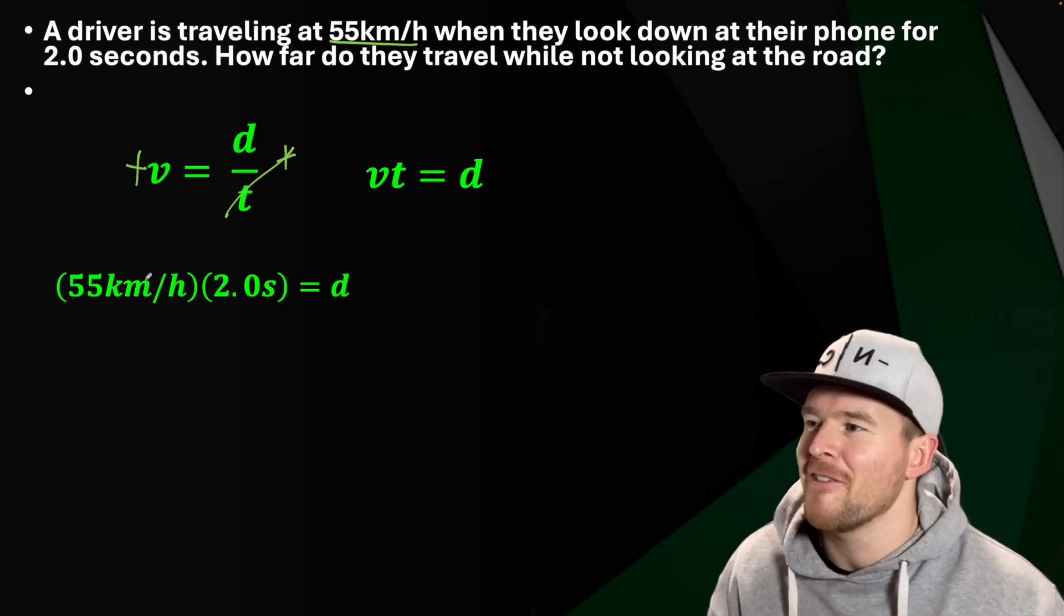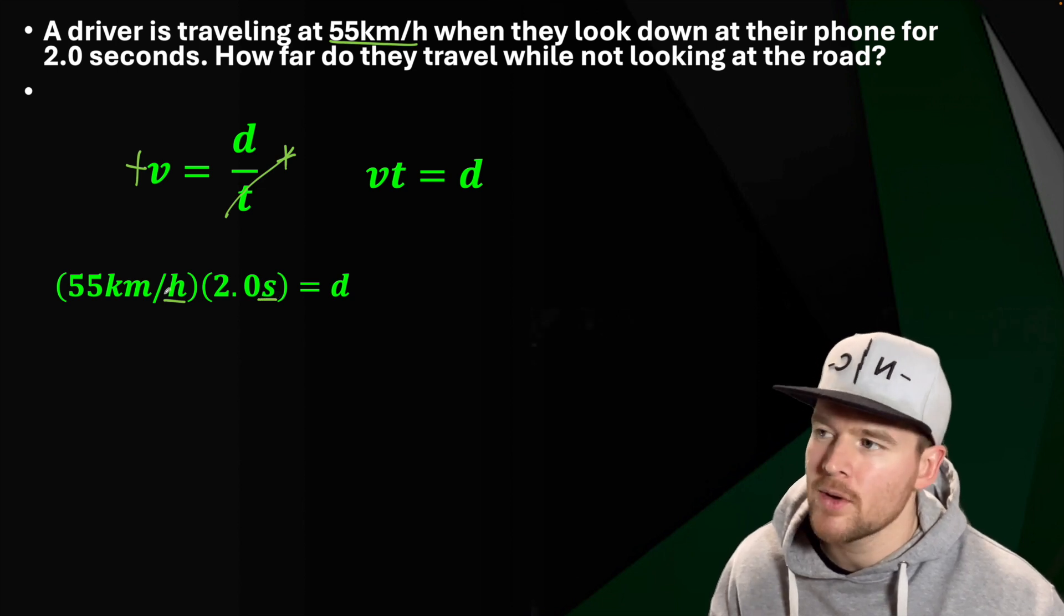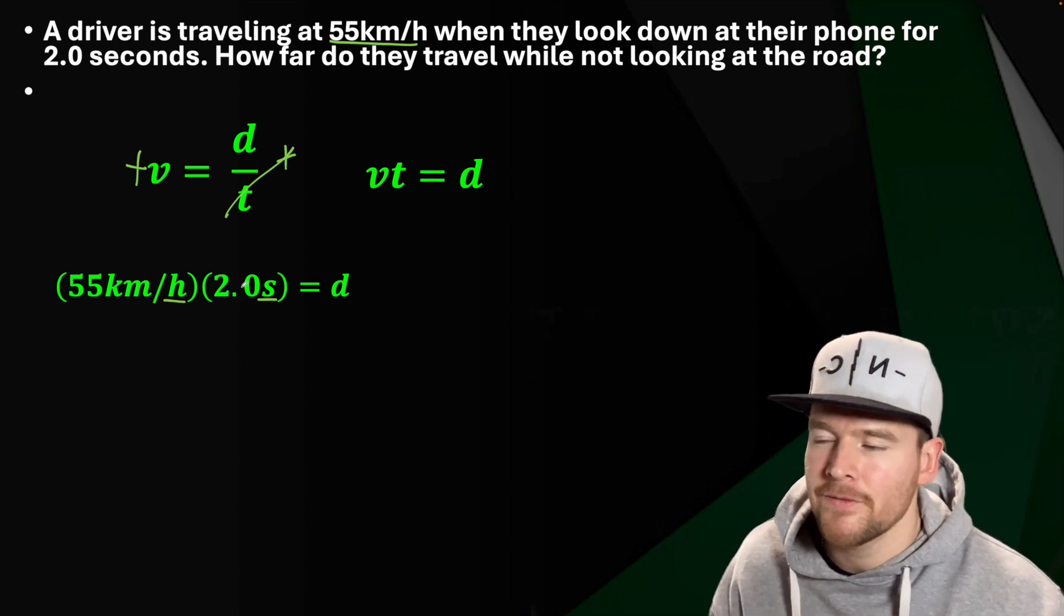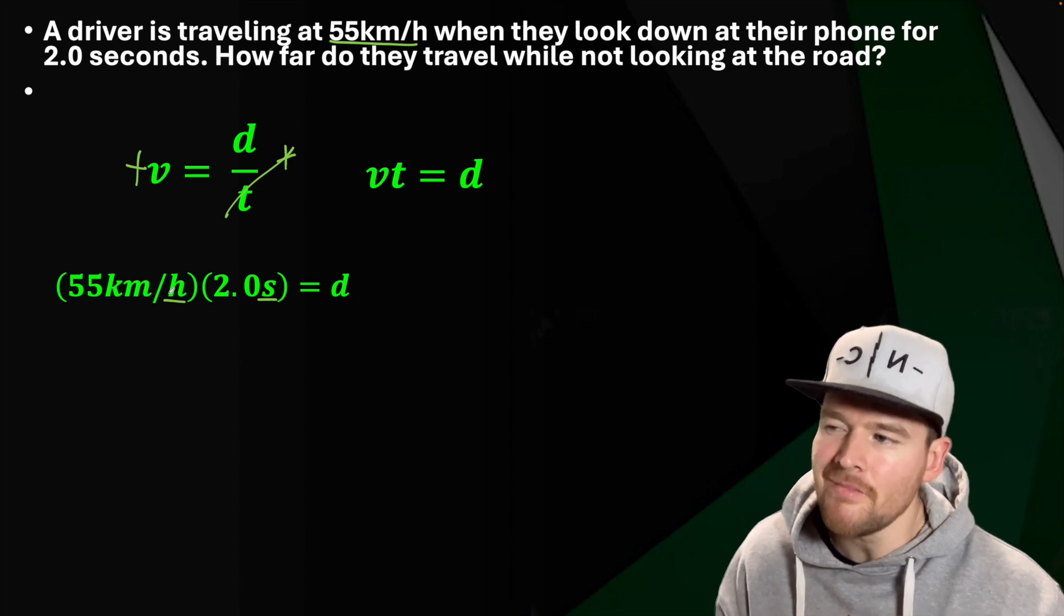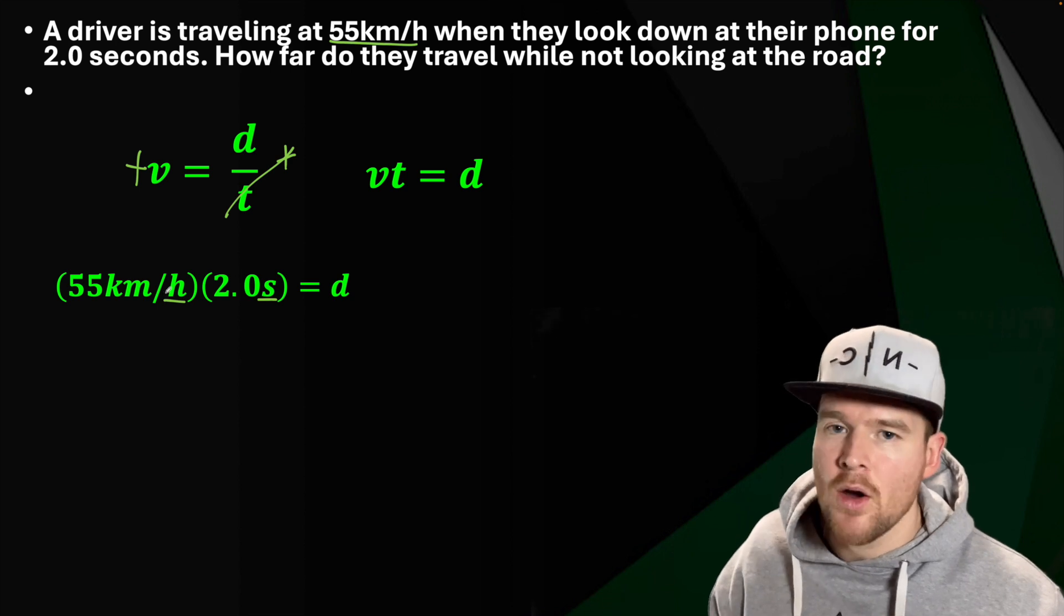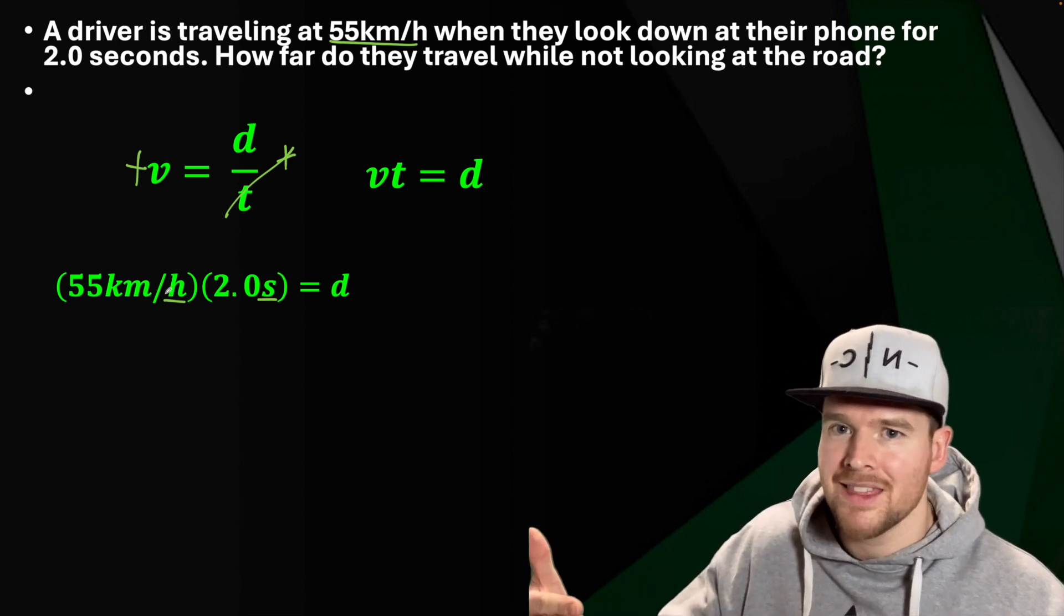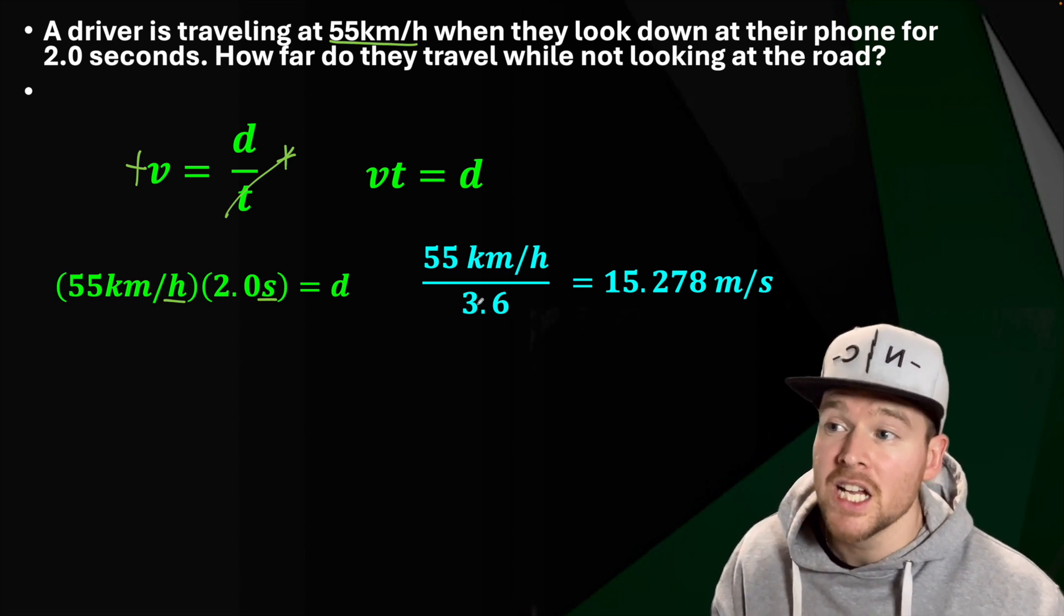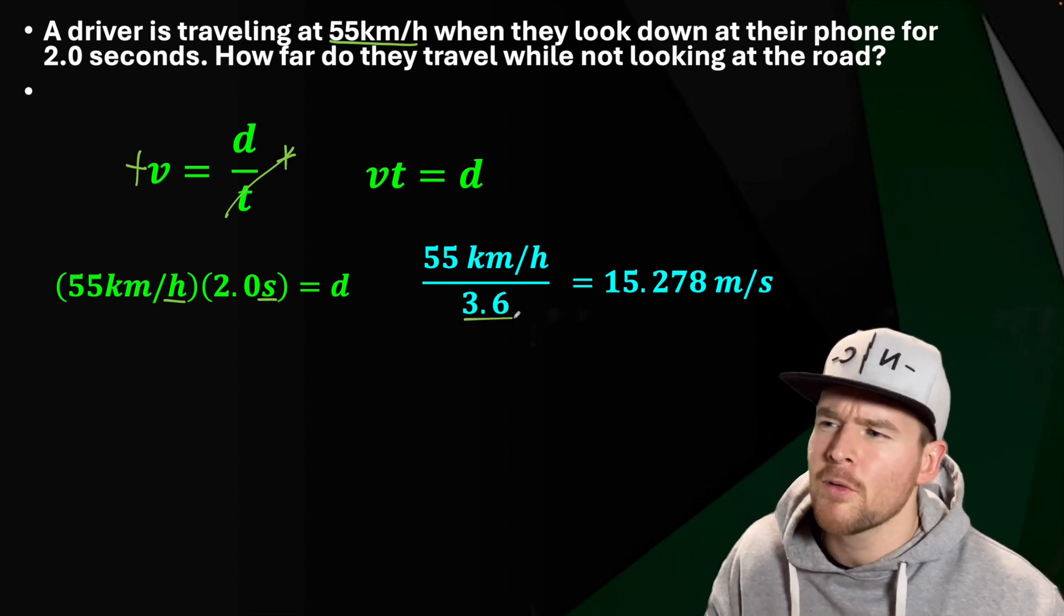So now we'll take 55 kilometers per hour times two seconds. Wait a second. We have kilometers, hours, seconds. These are not the same units. I have my time here in hours and this one in seconds. So in this case, I'm going to convert this kilometers per hour into meters per second. It's a little bit complex, but what we have to do is kilometers to meters is times by a thousand, and then hours into seconds, we have to divide by 60 to get to minutes and then 60 again to get to seconds. There's a simpler thing to remember: divide by 3.6. So 55 divided by 3.6, they're going at 15.278 meters per second.